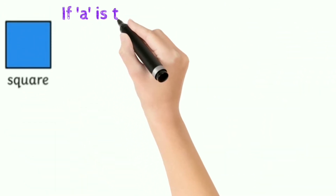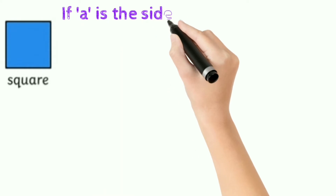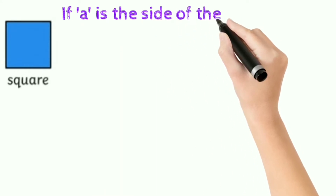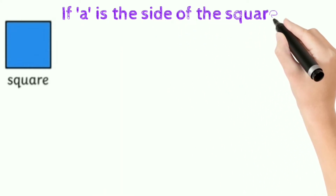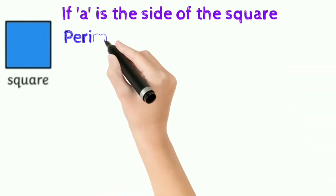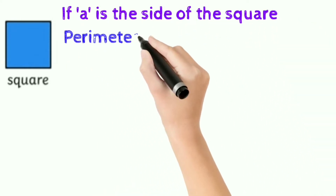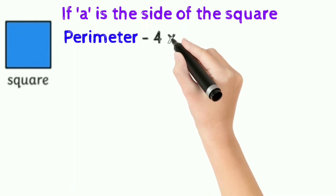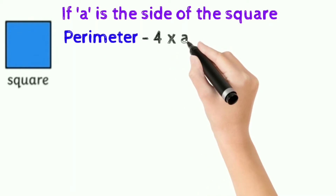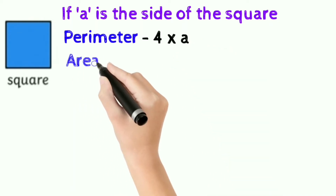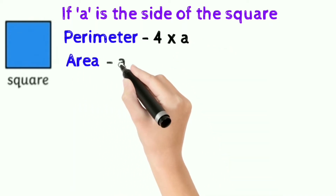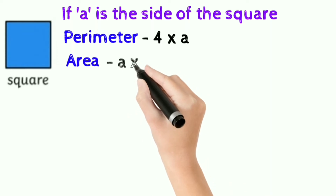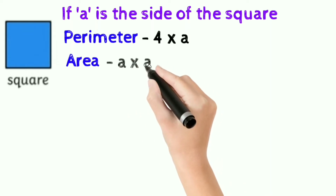Square: if a is the side of the square, perimeter of the square is 4a, that is 4 into a, and area of the square is a into a, that is a squared.